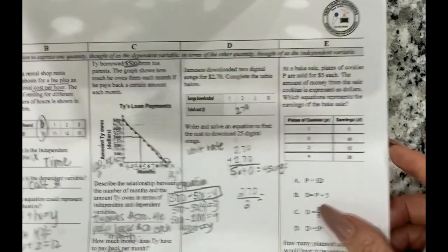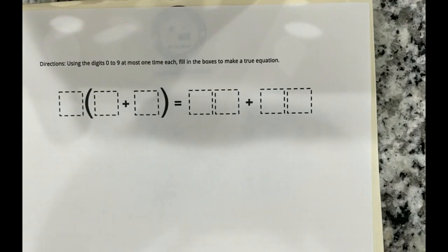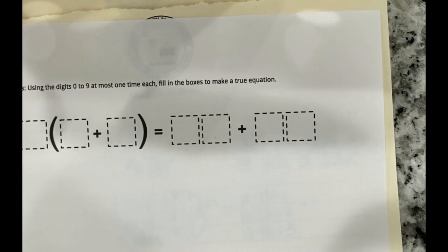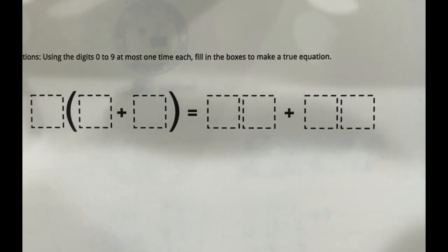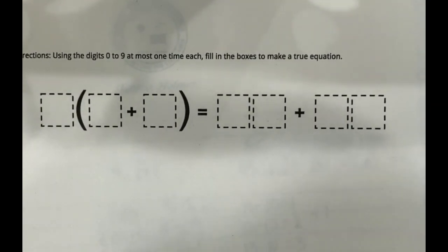I am going to give you your challenge problem for next week. It says using the digits zero to nine at most one time each fill in the boxes to make a true equation. So just remember, you got to use zero to nine at most to fill it in. All right. Have a great week. We'll see you next week for a new lesson. Bye.